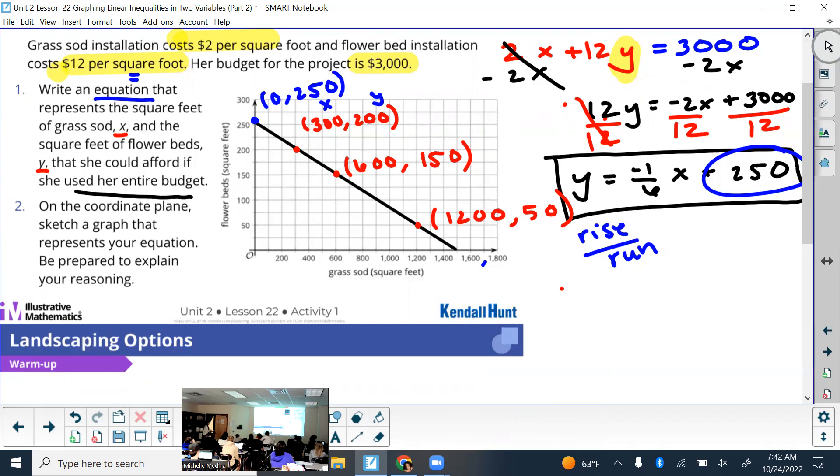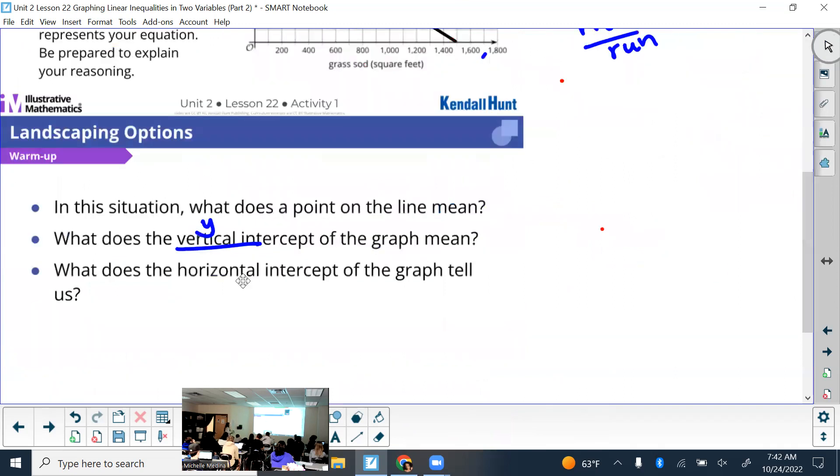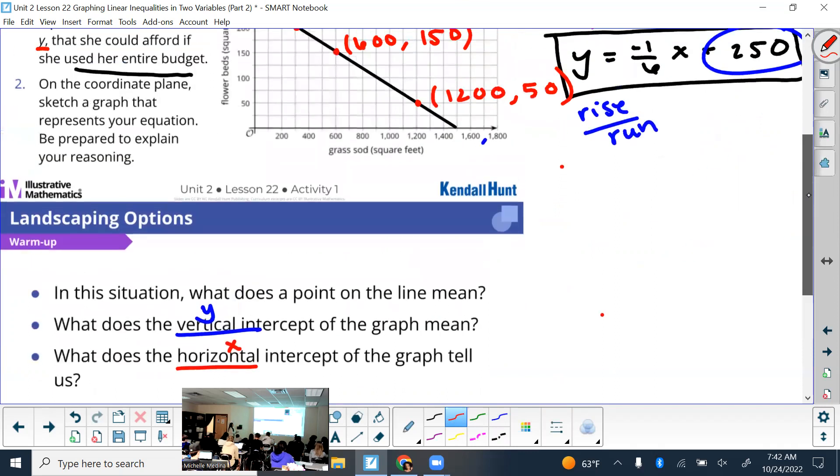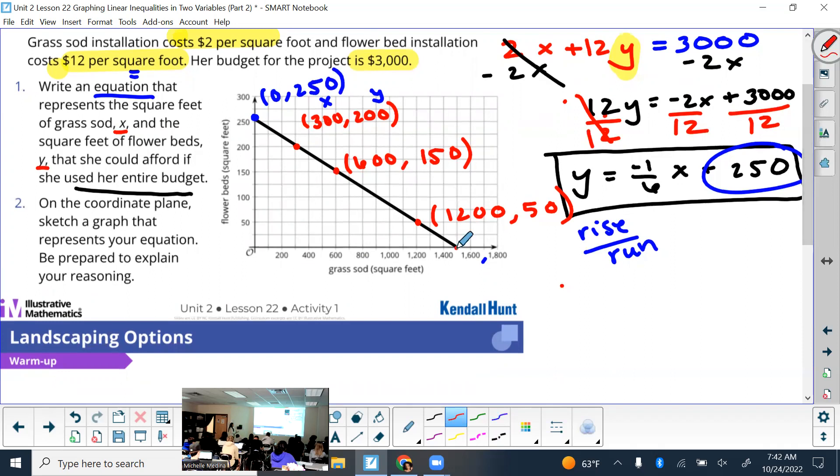All right, so usually y intercept is the starting amount. And this one is how much flower bed she could have if you have zero grass. And then what's the horizontal? Which axis is horizontal? The x intercept. So here at the 1,500, zero, what would that be?